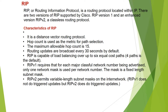RIP is capable of load balancing for up to 6 equal-cost paths by default. RIP version 1 requires that for each major classful network number being advertised, only one subnet mask is used — a fixed-length subnet mask.